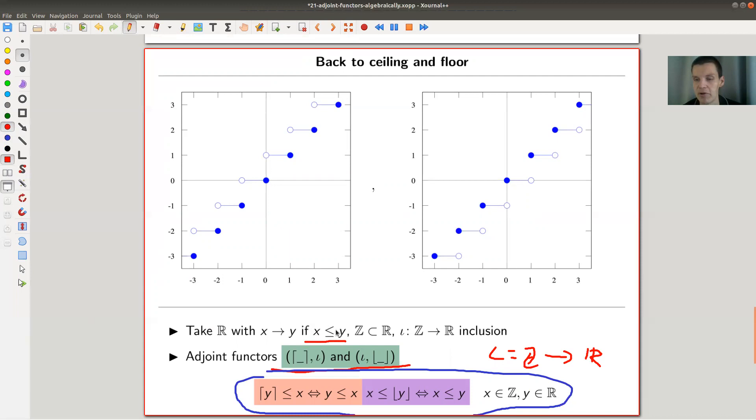And in this category, from R to the corresponding subcategory Z, and from Z to R, there you have this adjoint functors pair.